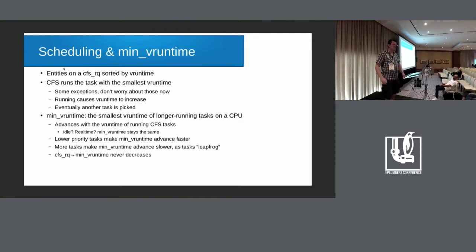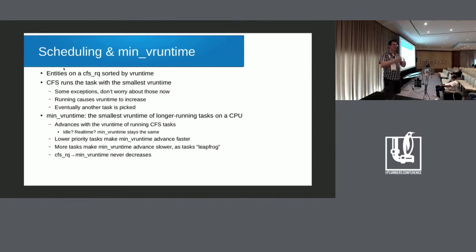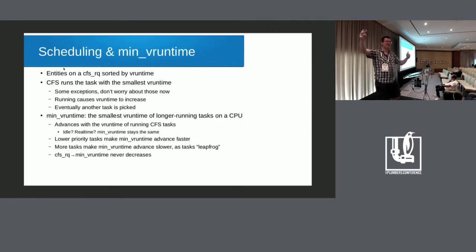Every run queue in CFS is a bunch of sched entities sorted by v-runtime. In most cases, CFS will run the task that has the smallest v-runtime number on that particular CPU. That task runs for a bit, and eventually its v-runtime number becomes larger than the next task on the list, because while it's running, its v-runtime keeps getting bigger. At some point it will exceed the v-runtime of whatever other task was second in the run queue.